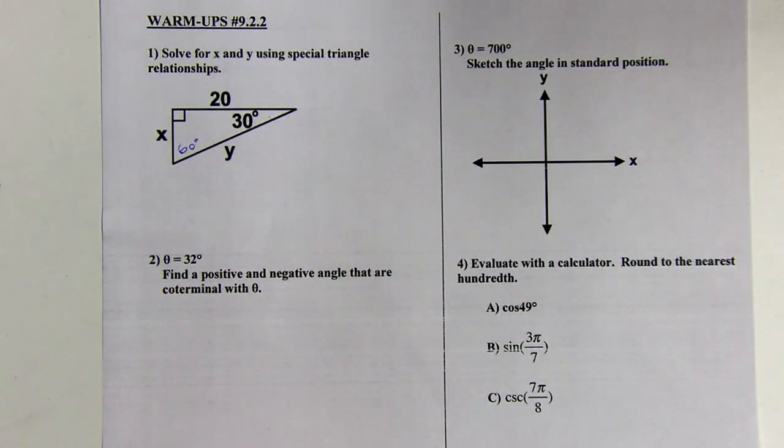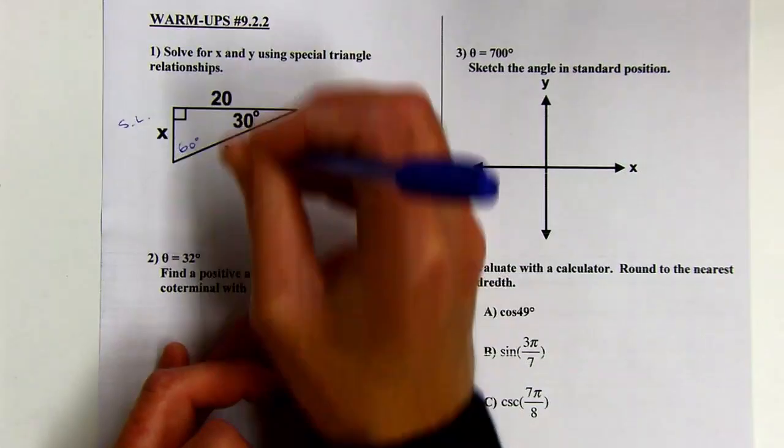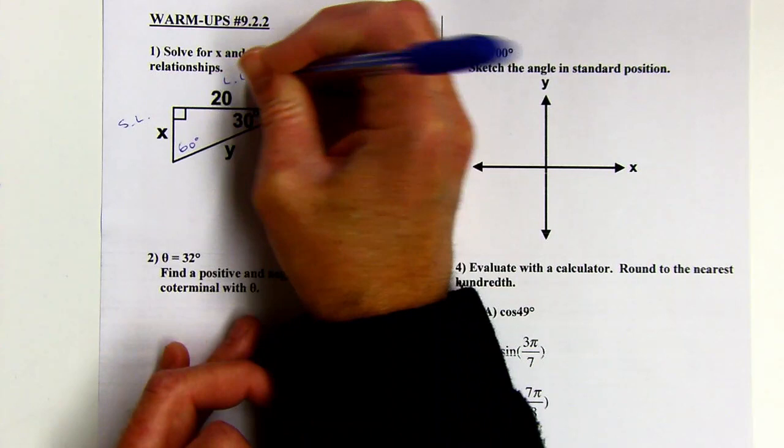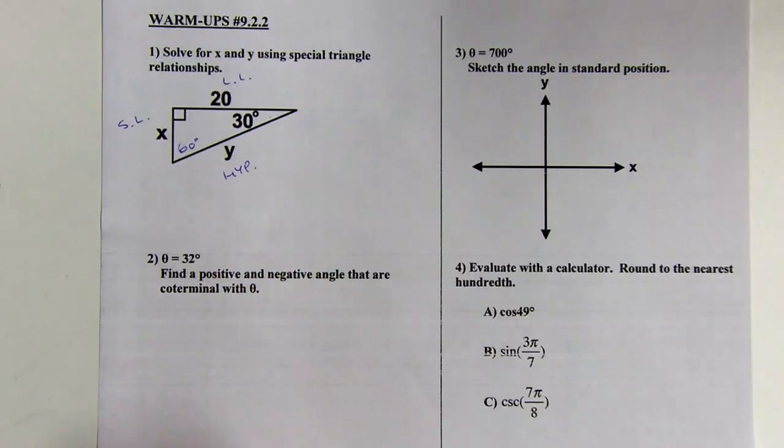Okay, so here I've got my short leg. I'm just going to put SL for short leg. This would be the long leg and then the Y, the side where the Y is, would be the hypotenuse. Okay, so the piece I have is the long leg.